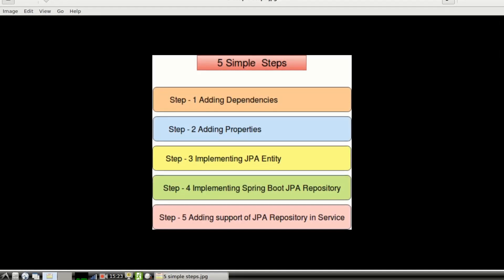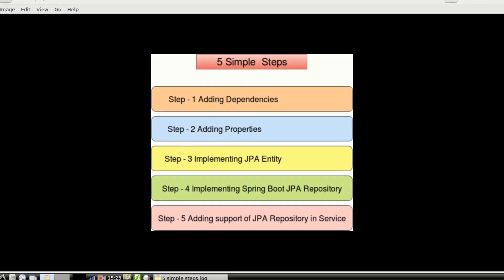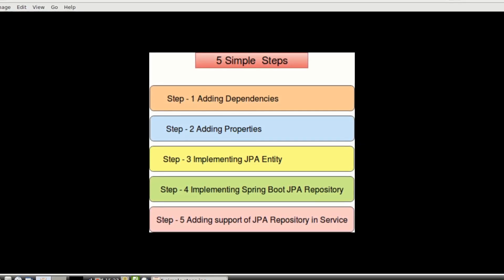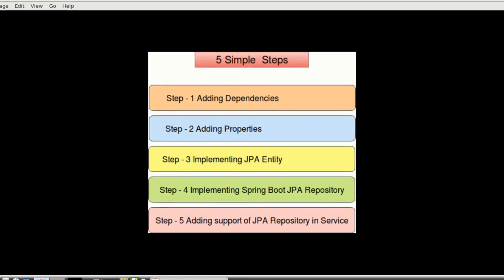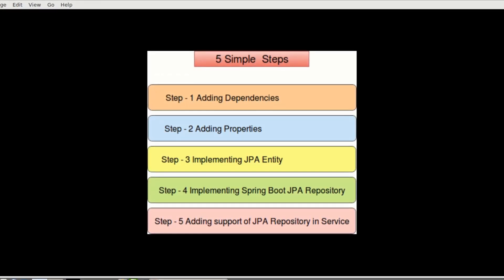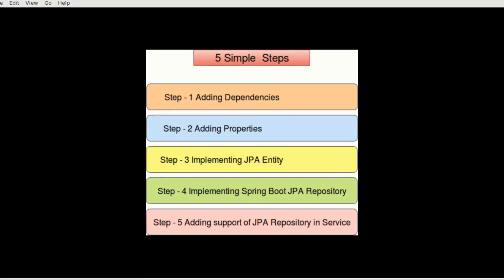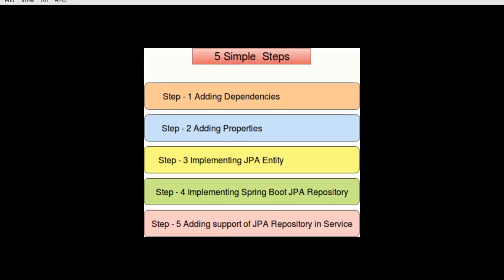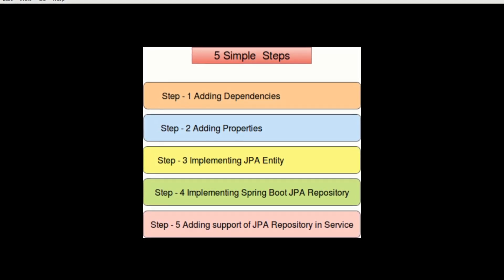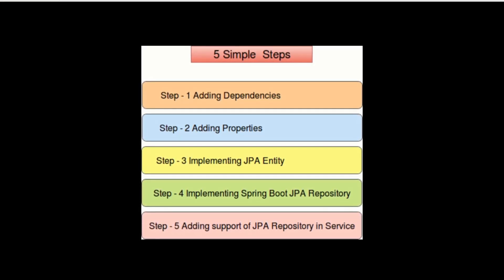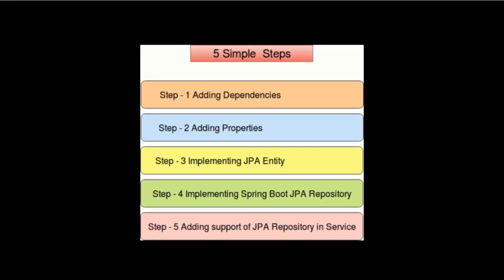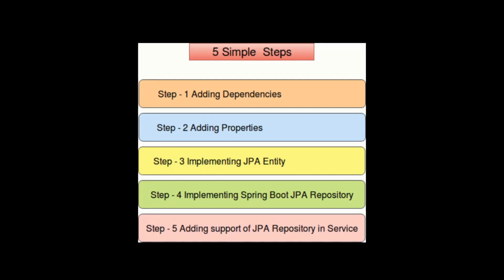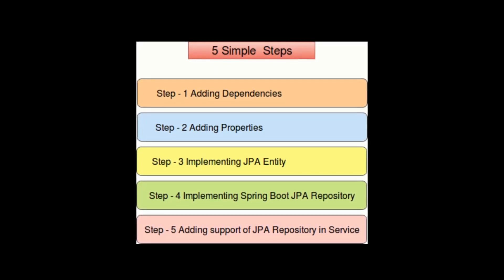Now, what are these five simple steps? Step 1: Adding Spring Boot JPA and PostgreSQL driver class dependencies in build.gradle. Step 2: Adding properties related to Spring Boot JPA and PostgreSQL in application.properties. Step 3: Converting the account domain to account entity using Spring Boot JPA annotations. Step 4: Implementing Spring Boot JPA repository. Step 5: Adding support of Spring Boot JPA repository in the service class.